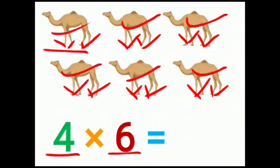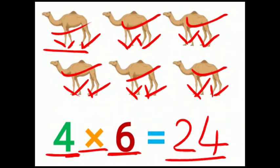Children, 4 legs, 6 camels. 4×6 is equal to 24. 24 legs. 4 sixes are 24.